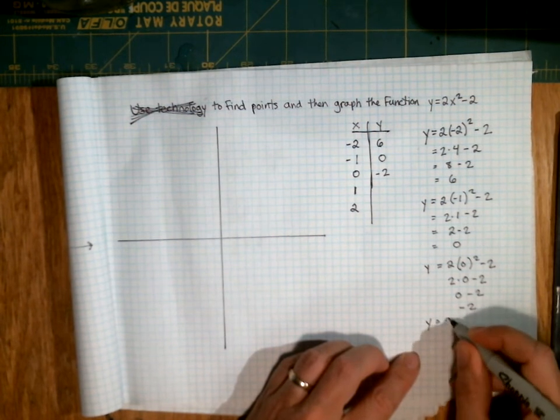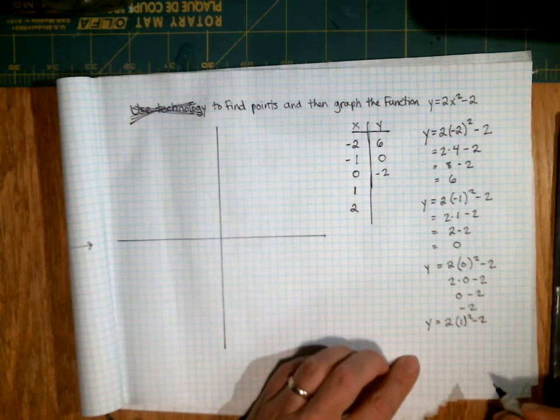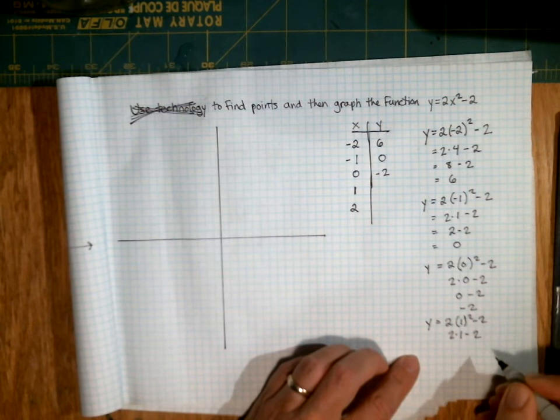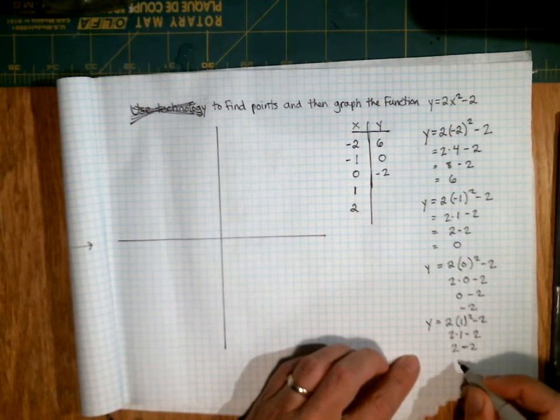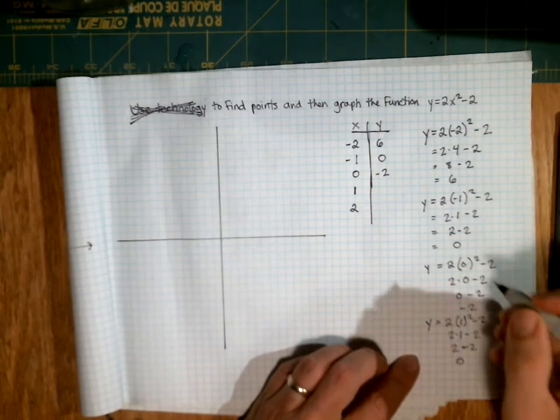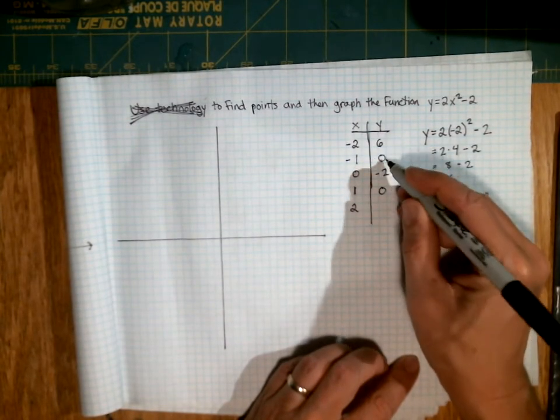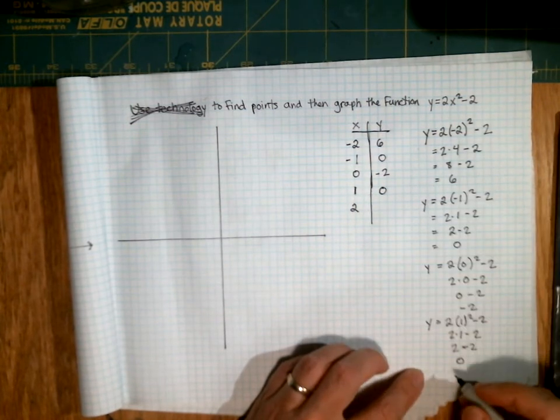When x is 1, I'll have 2 times 1 squared minus 2. And that's just 2 times 1 minus 2. And that's just 2 minus 2, which is 0. So I don't know if you noticed, but something interesting is happening now. It used to be going down, the y values, and now they've sort of taken a turn. They're going back up, it looks like.